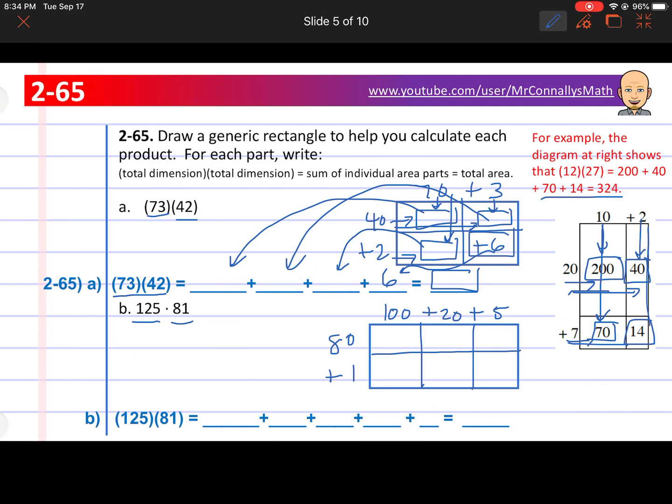So now you'll just do some multiplying. 80 times 100 will go in this box, 80 times 20 will go here, 80 times 5 goes here, 1 times 100 goes here, 1 times 20, and 1 times 5. You'll put all those answers into these spots over here. It doesn't really matter which order you put them in. And that should be whatever 125 times 81 is. You can check it with your calculator. Go ahead and pause the video and fill those all in.